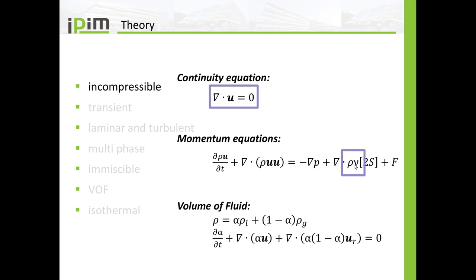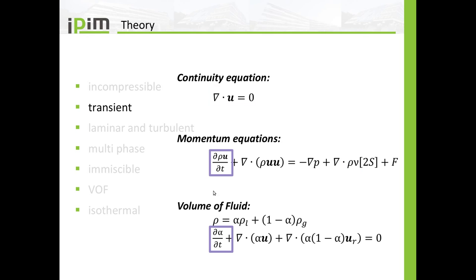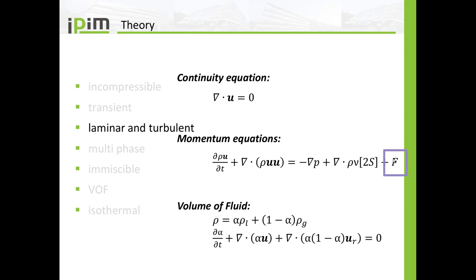In the diffusion term, we are using the dynamic viscosity, which is given by the density and the kinematic viscosity. The pressure p-value is now really the pressure in Pascals. Transient means that we have a partial time derivative in the equations, and we can solve for laminar flow or include additional terms for turbulence modeling — check my tutorials on turbulence modeling for that. In the forcing term F, we have two additional terms: one being the surface tension and the second one is the gravitational term.